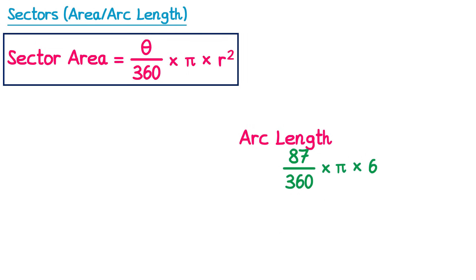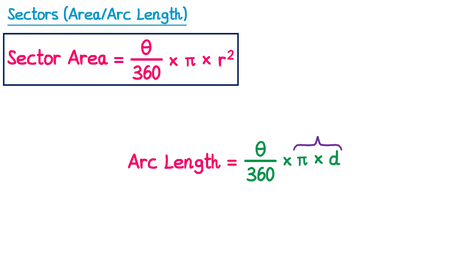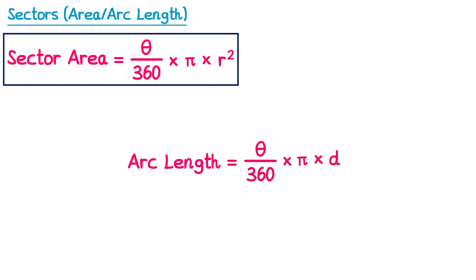We can generalise this formula too. The 87 was the angle for the sector, and the 6 was the diameter — not the radius. So the 87 can be replaced with theta, and the 6 can be replaced with d for diameter. Notice again that this is the formula for the circumference of the circle — we just multiply it by theta over 360. So more generally, the arc length formula is theta over 360 times pi times diameter.